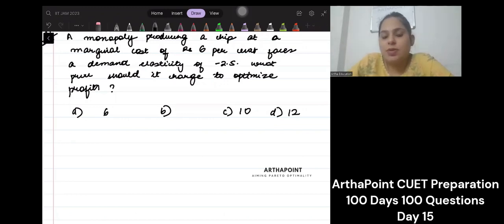A monopoly produces a chip at marginal cost of 6 per unit. It faces demand elasticity of minus 2. What price should it charge to optimize its profit?